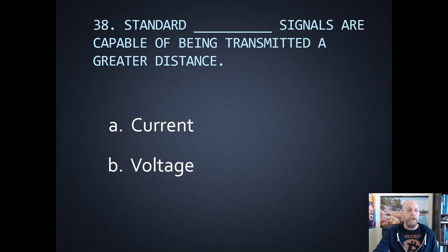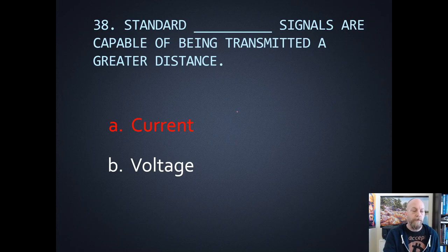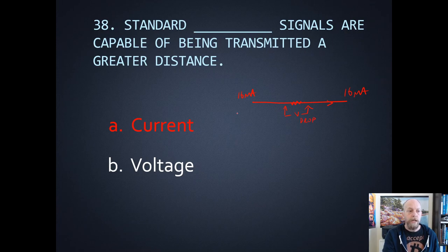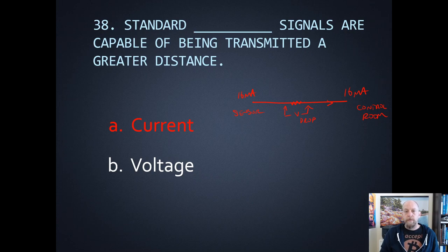Number thirty-eight: standard current or voltage signals — which is capable of being transmitted a greater distance? The current signal is the one that goes longer. On a 4 to 20 milliamp signal you have a series circuit — if you have 16 milliamps at the beginning, you're going to have 16 milliamps at the end. There's resistance and a voltage drop on the wire, but current remains the same in a series circuit. With a voltage signal, you'd have a voltage drop from the sensor to the control room that would affect the signal. So the 4 to 20 current can do 500 to 1,000 feet as long as the power supply is large enough.